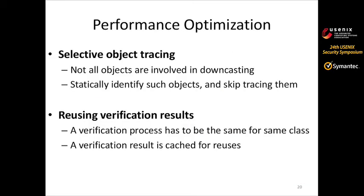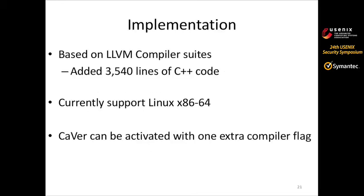We also perform several optimizations for CAVER. The first is selective object tracing — since not all objects are involved in downcasting, we statically identify such objects and skip tracing them. We also reuse verification results by caching them, since the verification process is always the same for the same classes. CAVER is implemented based on the LLVM compiler suite with more than 3,000 lines of C++ code. Currently we support Linux x86 64-bit, and CAVER can be activated with one extra compiler flag.